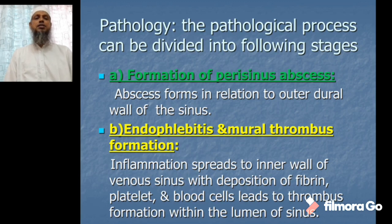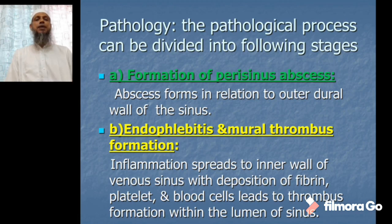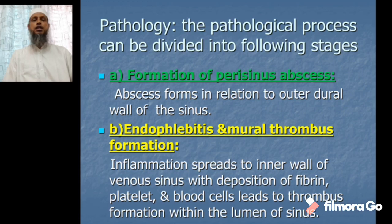In stage one, a peri-sinus abscess is formed in relation to the outer dural wall of the sinus. In stage two, endophlebitis and mural thrombus formation: the inflammation spreads to the inner wall of the venous sinus with deposition of fibrin, platelets, and blood cells, leading to thrombus formation within the lumen of the sinus.